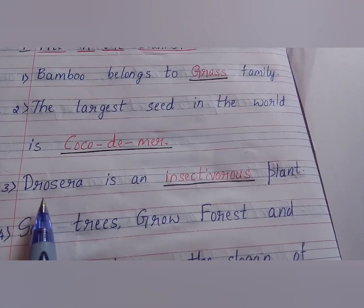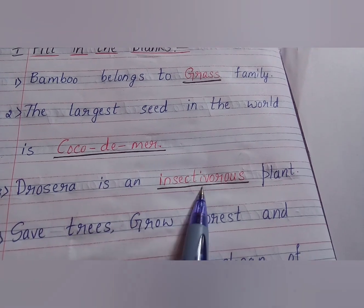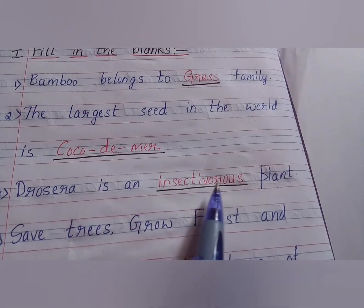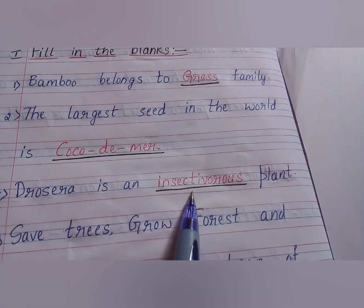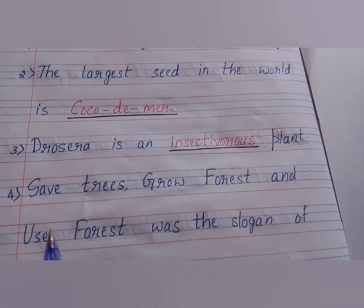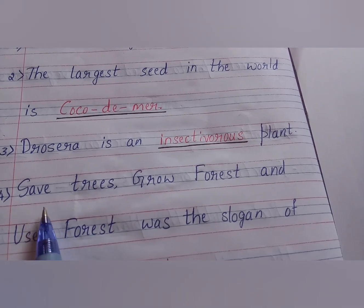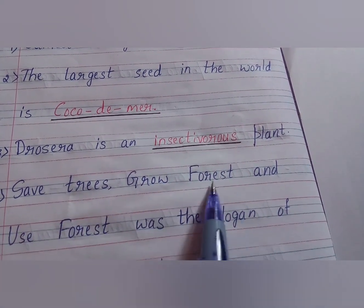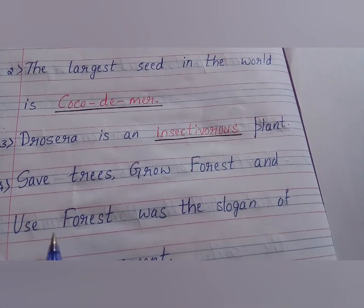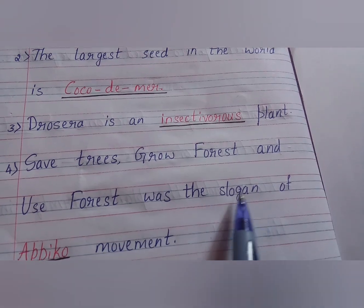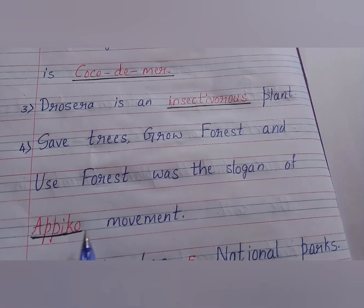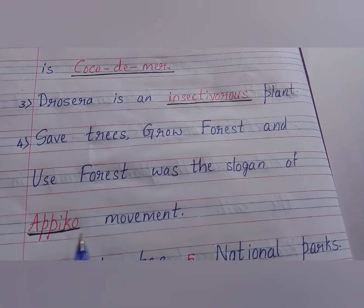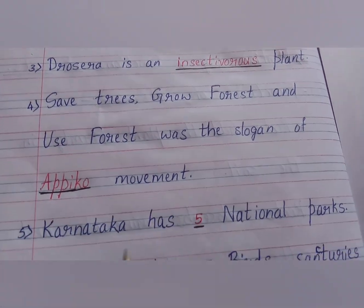Third question: Drosera is a dash plant. The answer is insectivorous plant. Fourth question: 'Save trees, grow forest and use forest' was the slogan of the dash movement. The answer is the Chipko movement.